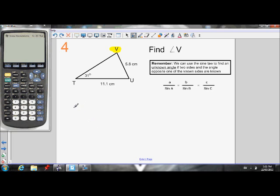So I know that V, the length of side V, over the sine of angle V is equal to the length of T over the sine of angle T, which is equal to the length of U divided by the sine of angle U.